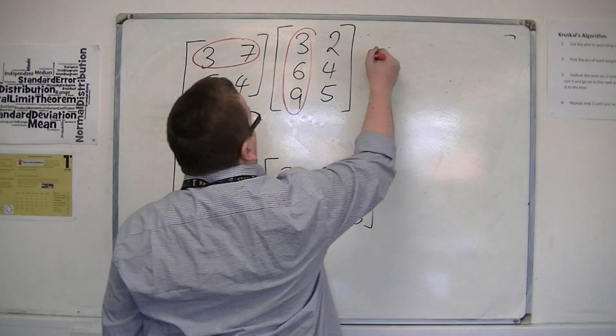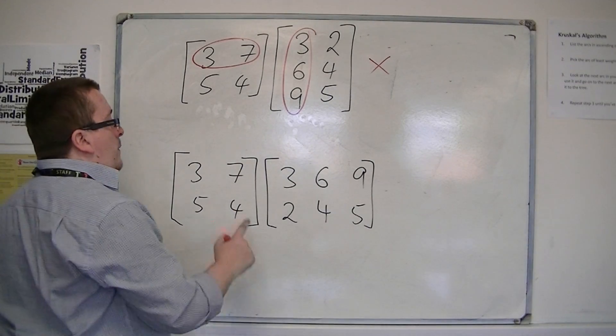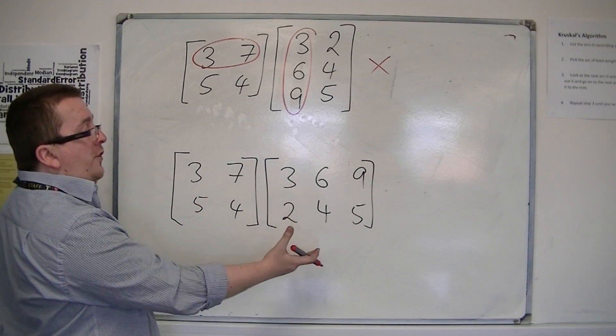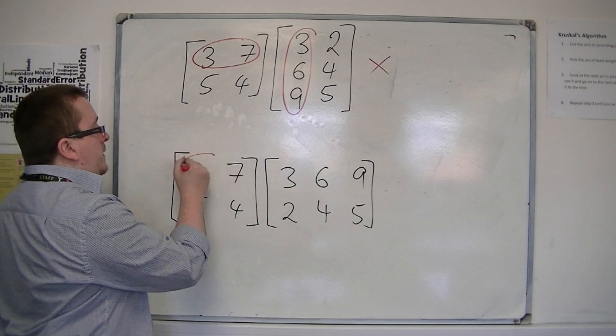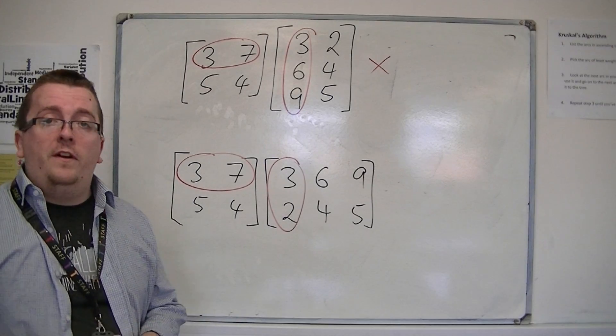And so, I cannot multiply these two matrices together. If, however, I'm looking at this, where I've just flipped this matrix over, I'm multiplying the 3 and the 7 by the 3 and the 2. So, that should work fine.